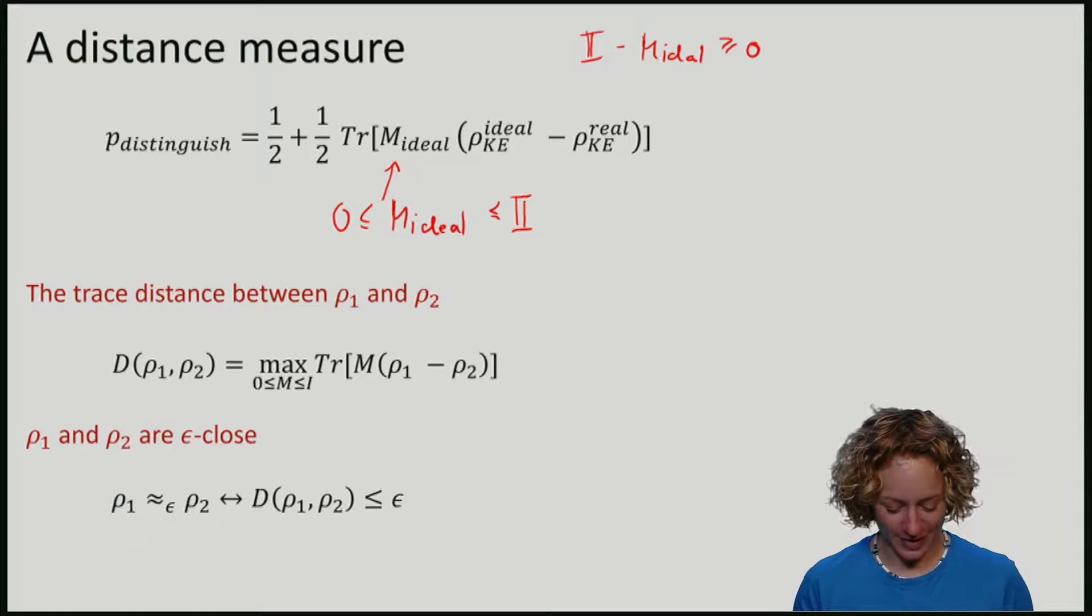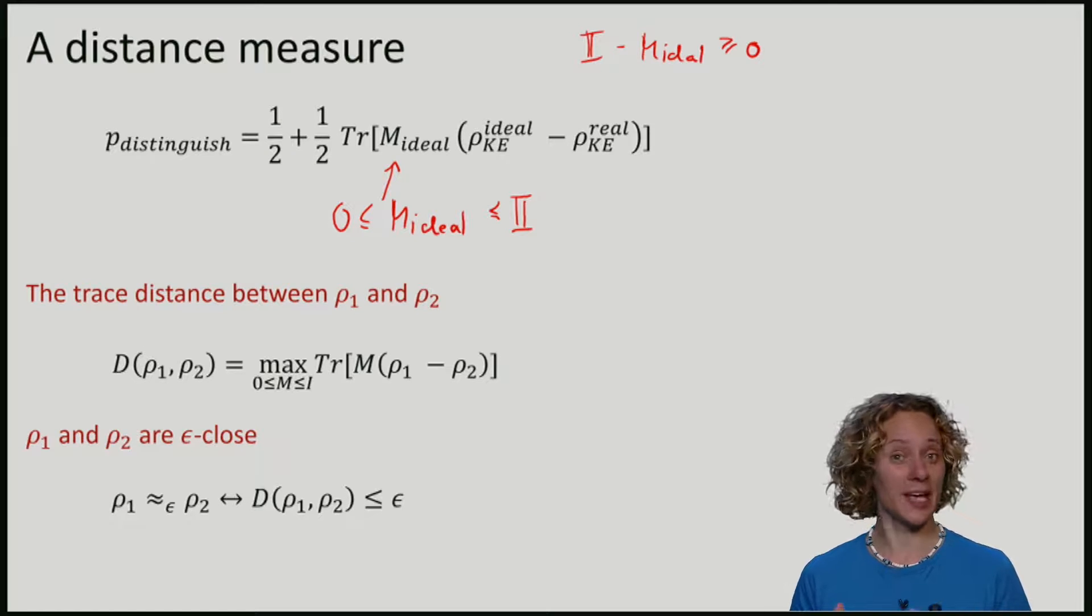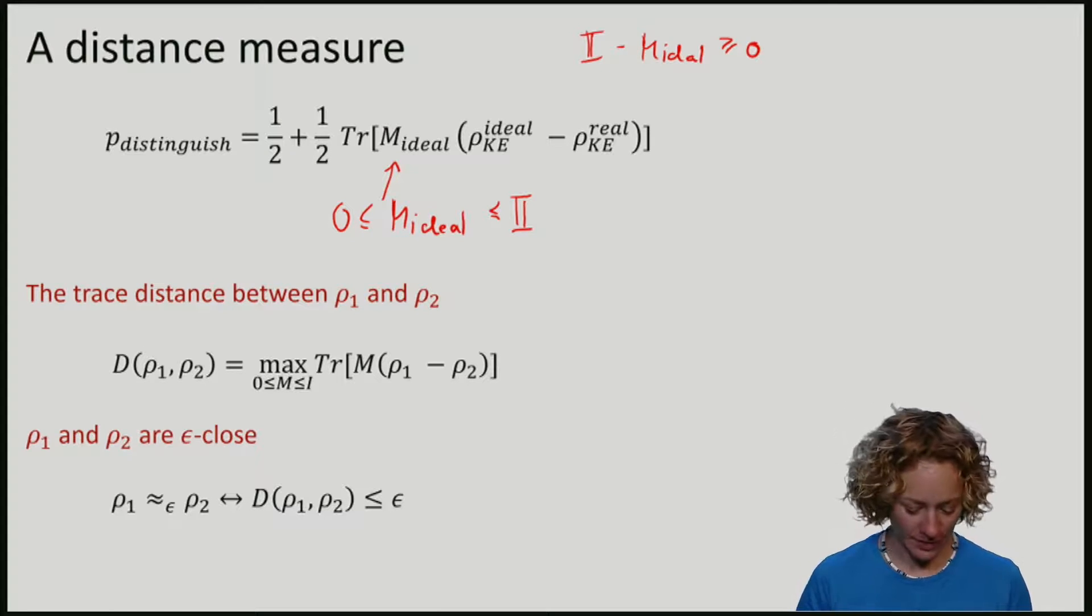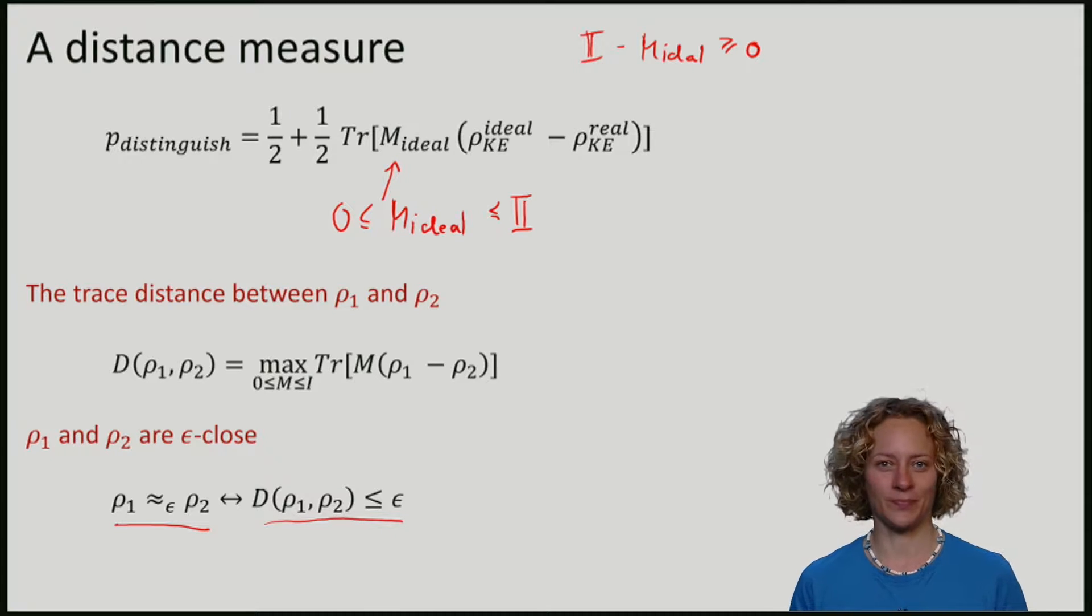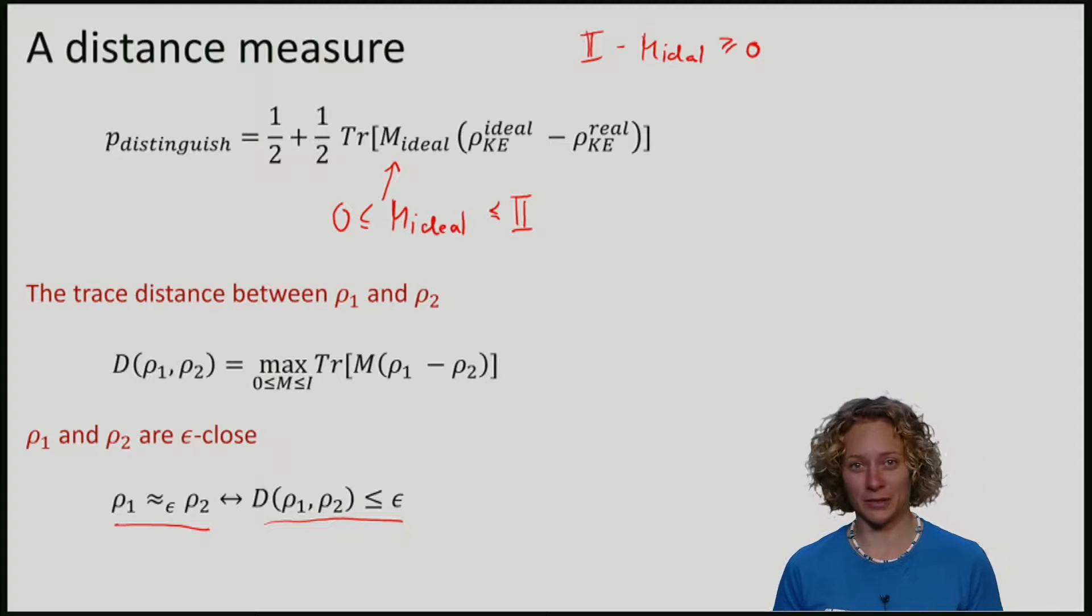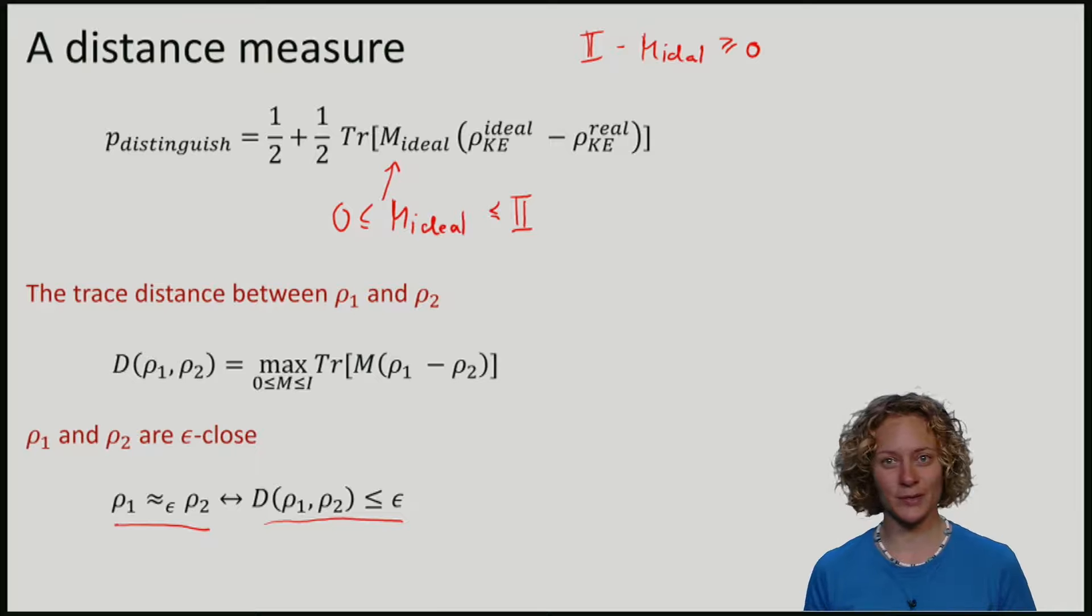We will also call two states ρ1 and ρ2 epsilon close, which I will write like this, if the trace distance between them is less than epsilon. So, we see now that the trace distance is quite intuitive. Two states are close if they are difficult to distinguish.